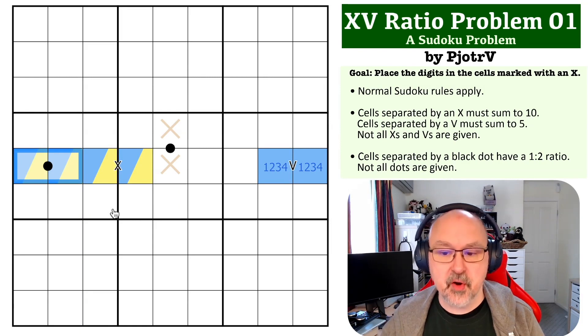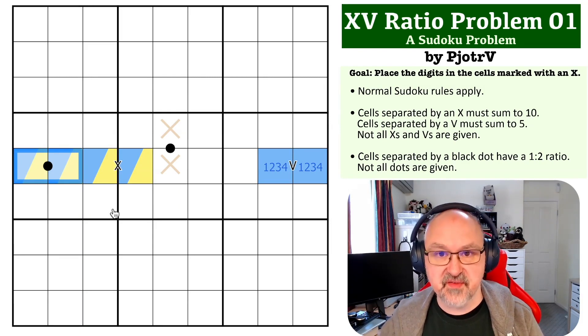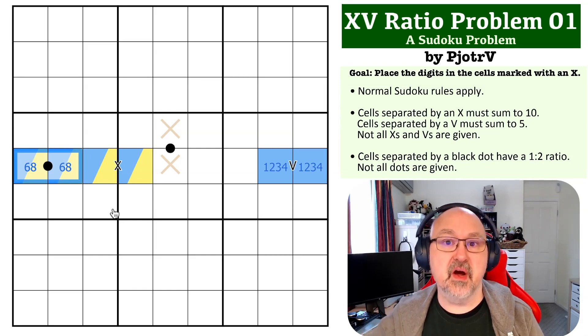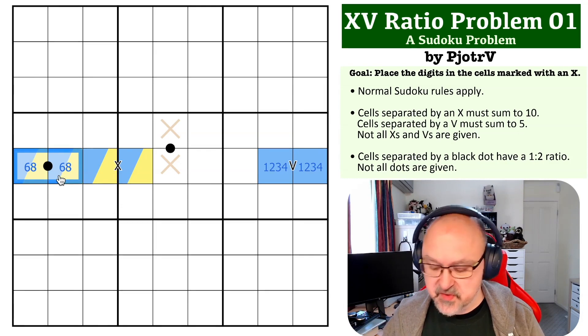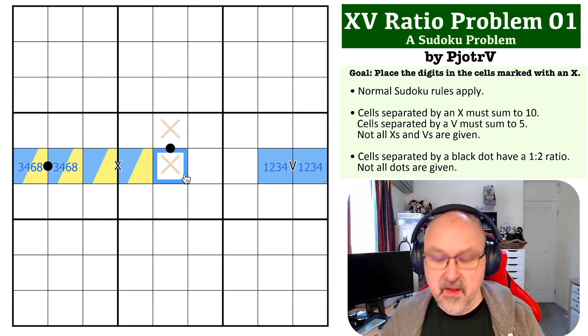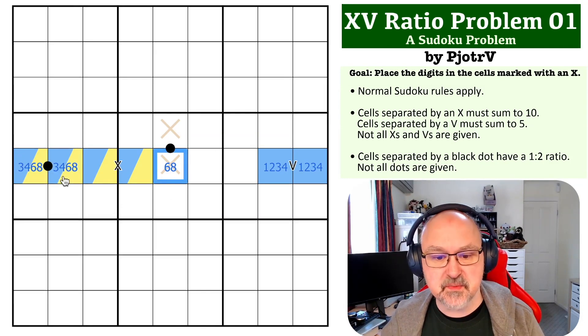So because I have to put a high digit, the only high digits available for a black dot are six and eight, because seven and nine don't have a ratio. So six and eight, which means the other one is going to be three and four. This also means this is six and eight.